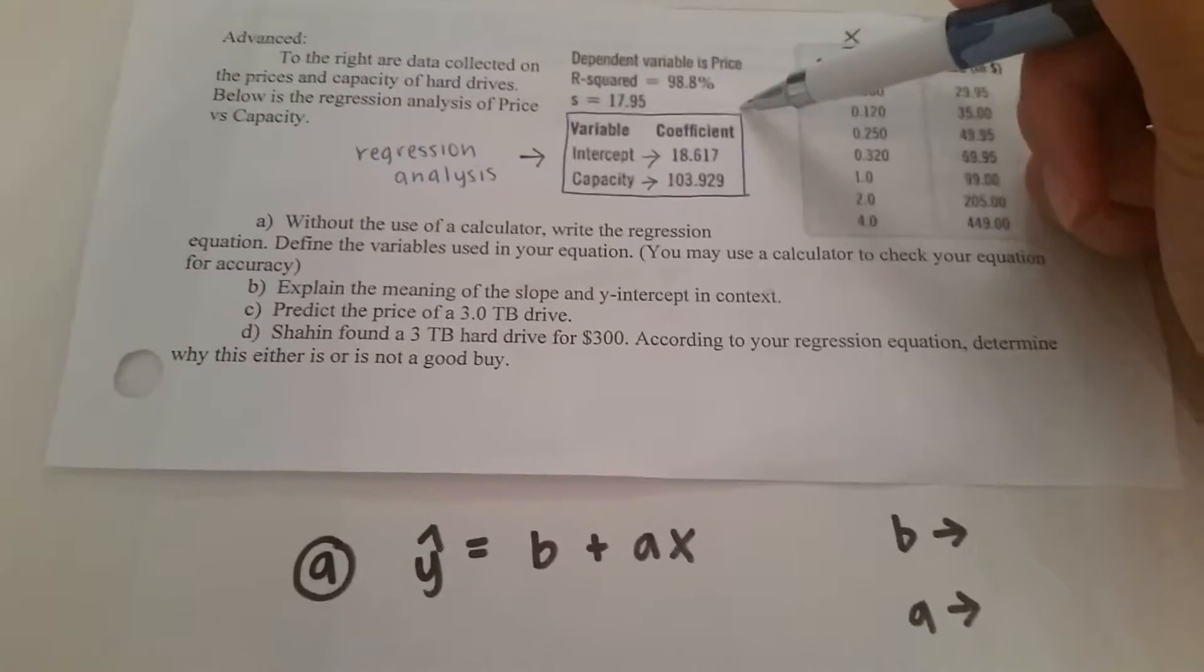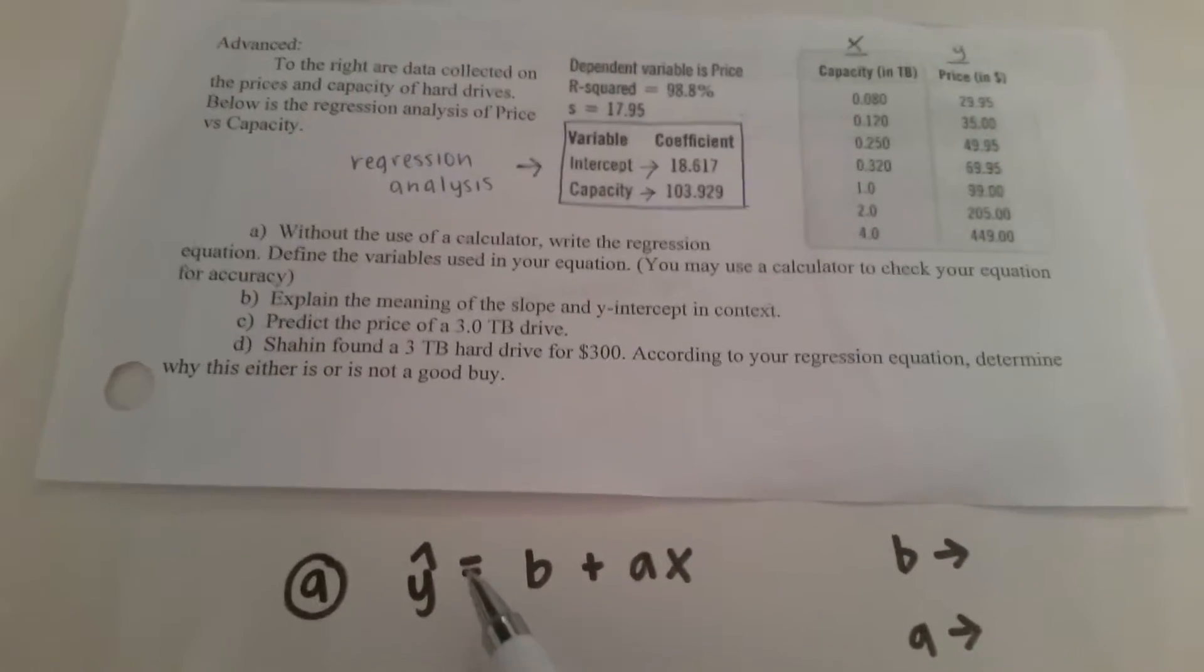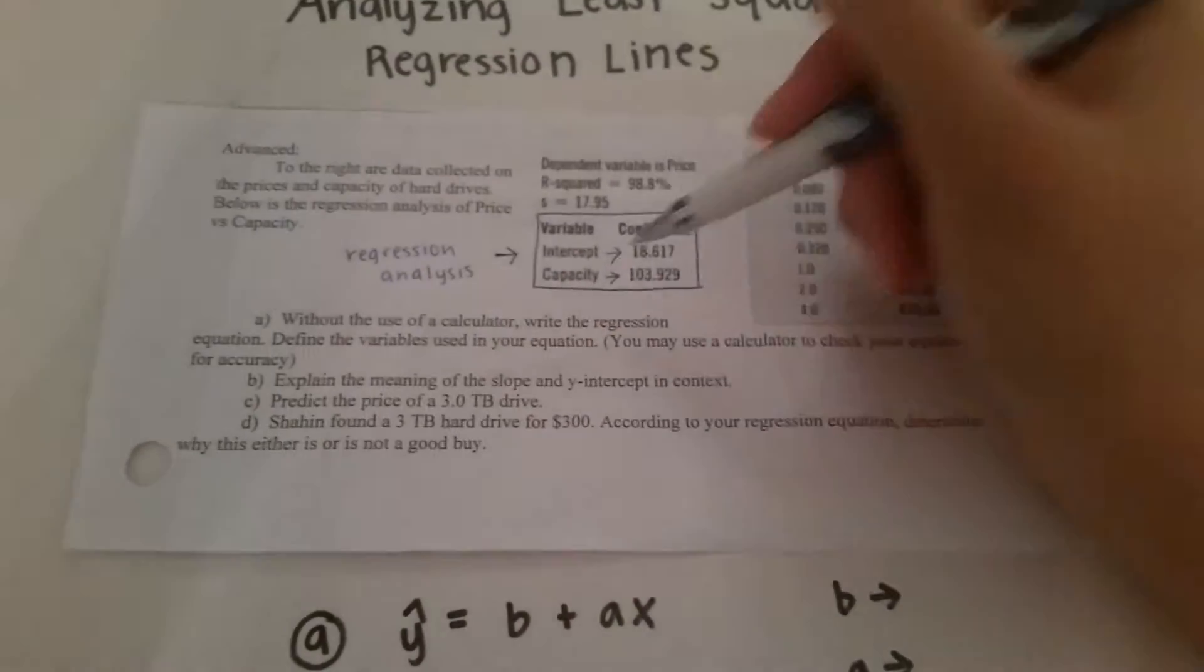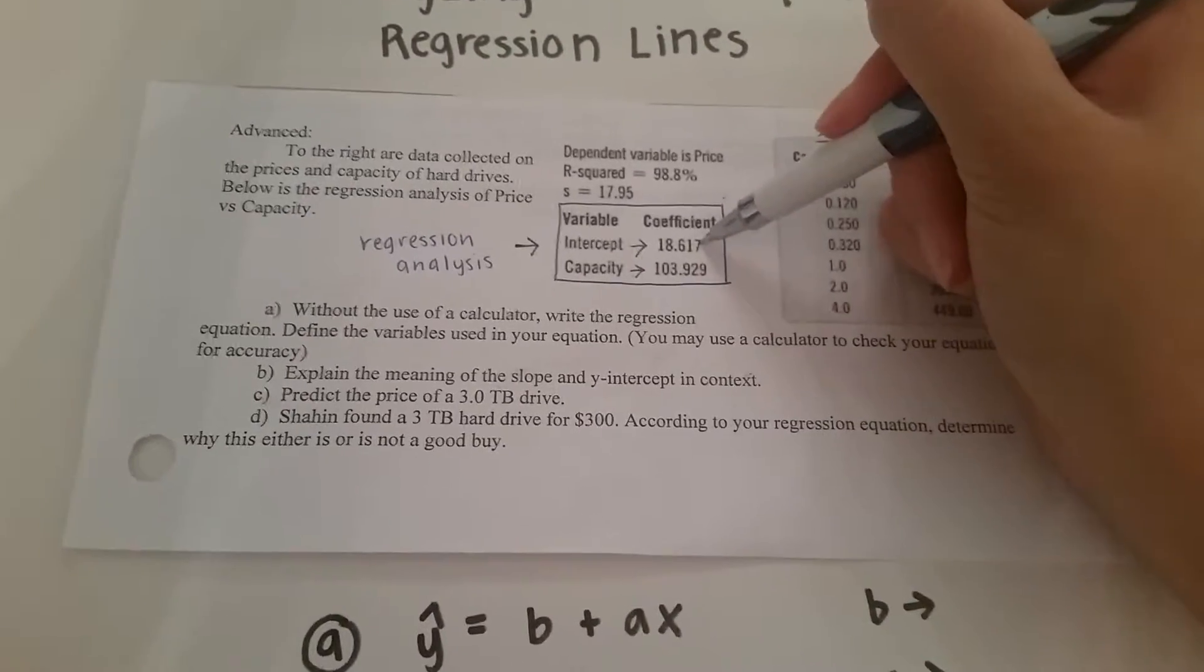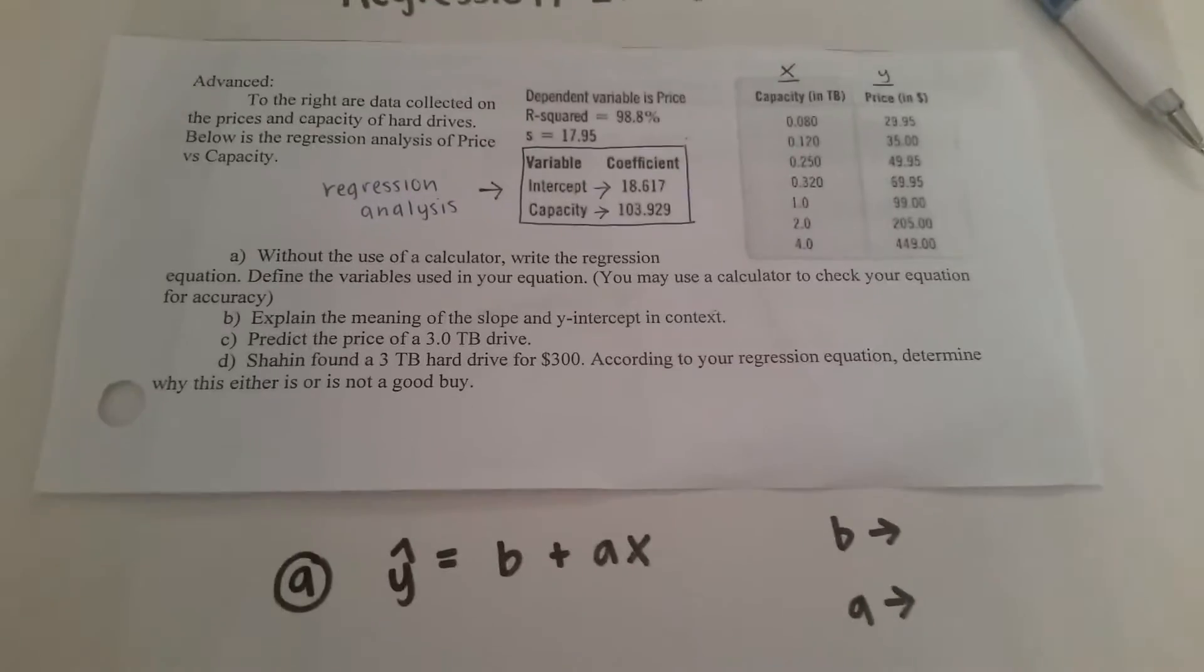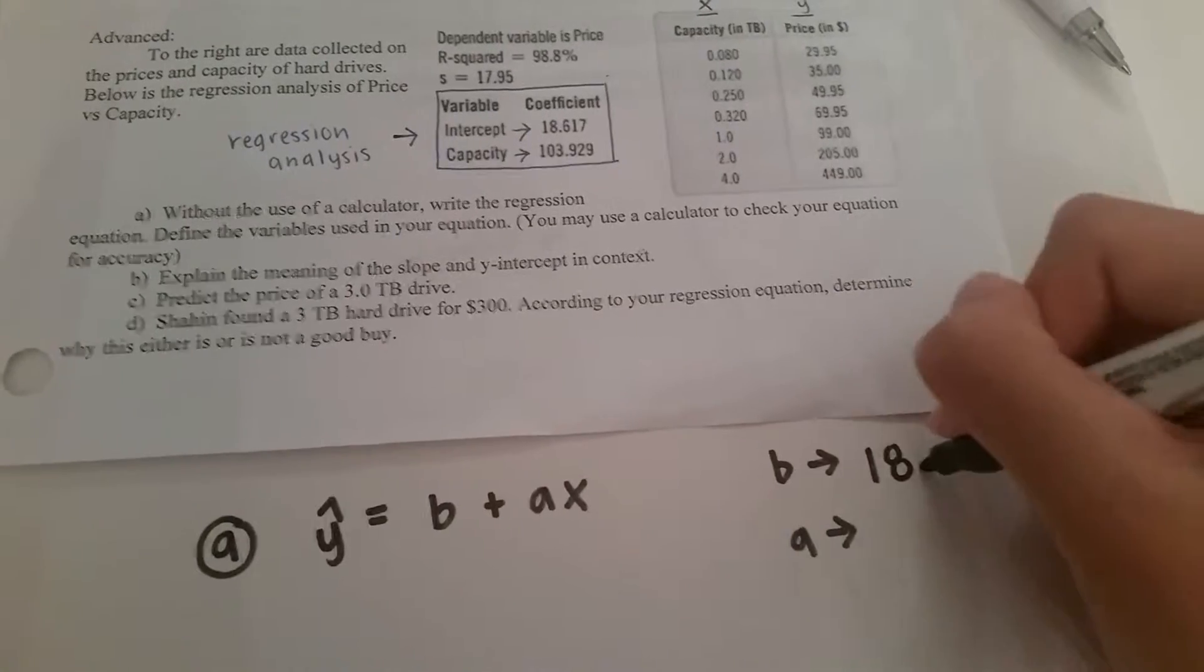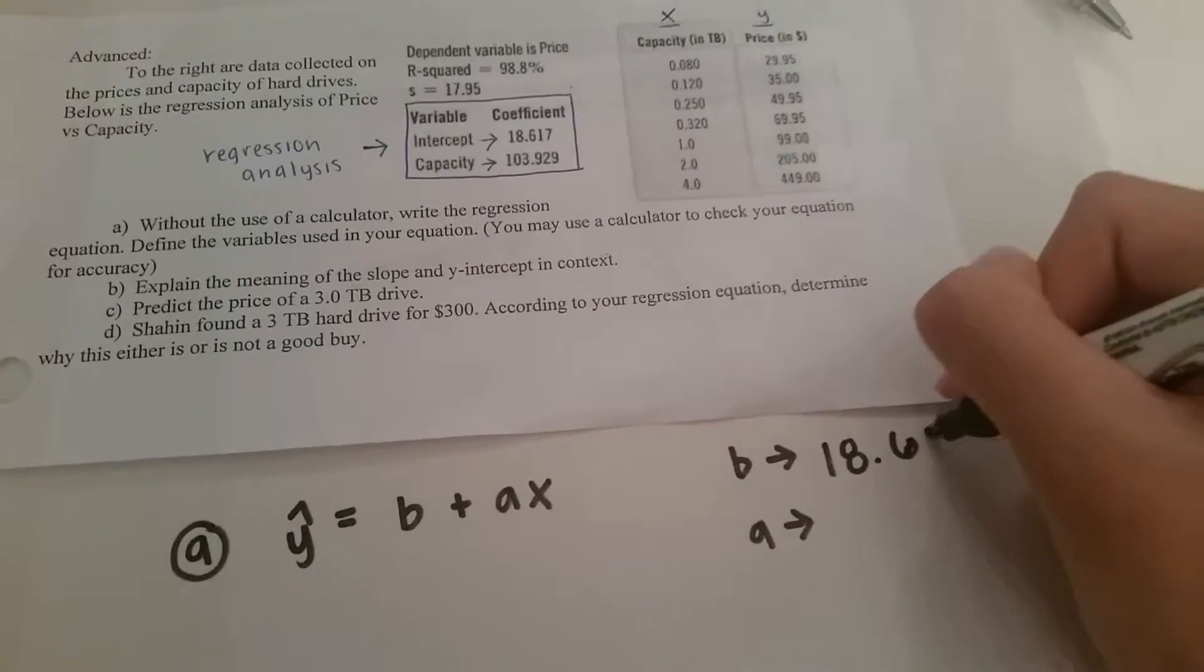Now the regression line model is y hat equals b plus ax. Right here the intercept is stated as 18.617 so you can assume that b which is the intercept is 18.617.